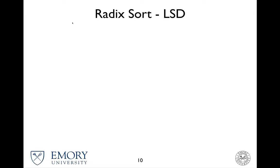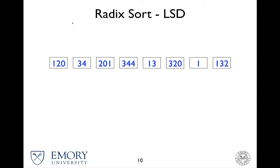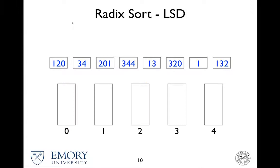In this video, I'm going to show you how a radix sort works that uses the least significant digit. So given a list of random integer values like this, we first consider only the least significant digit. In theory, we need 10 buckets because there are 10 digits.